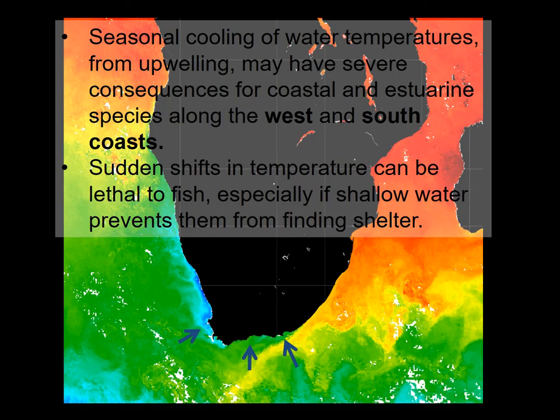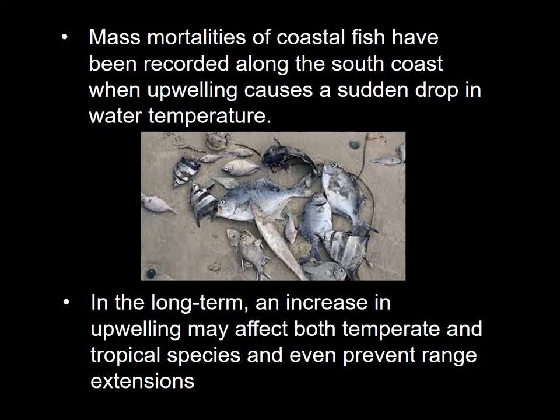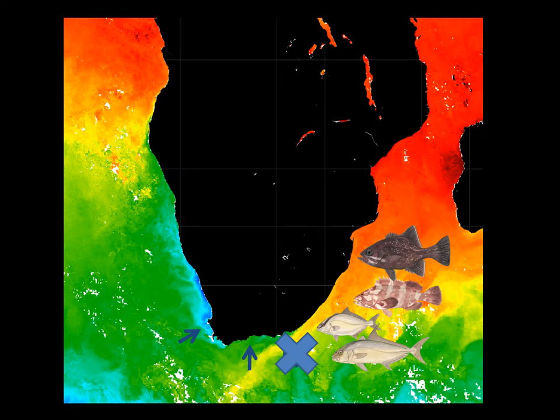Seasonal cooling of water temperatures from upwelling — not in estuaries but in the sea — may have severe consequences for coastal and estuarine species along the west and south coasts. This is because sudden shifts in temperature can be lethal to fish, especially if shallow water prevents them from finding shelter. Mass mortalities of coastal fish have been recorded along the south coast when upwelling causes a sudden drop in water temperature. In the long term, an increase in upwelling may affect both temperate and tropical species and even prevent range extensions, potentially causing a squeeze of the warm-temperate region in South Africa.